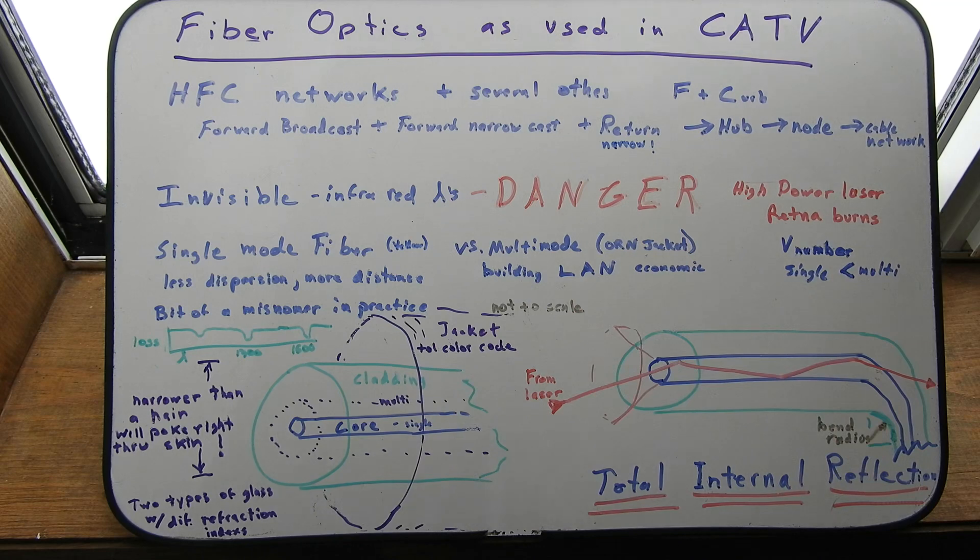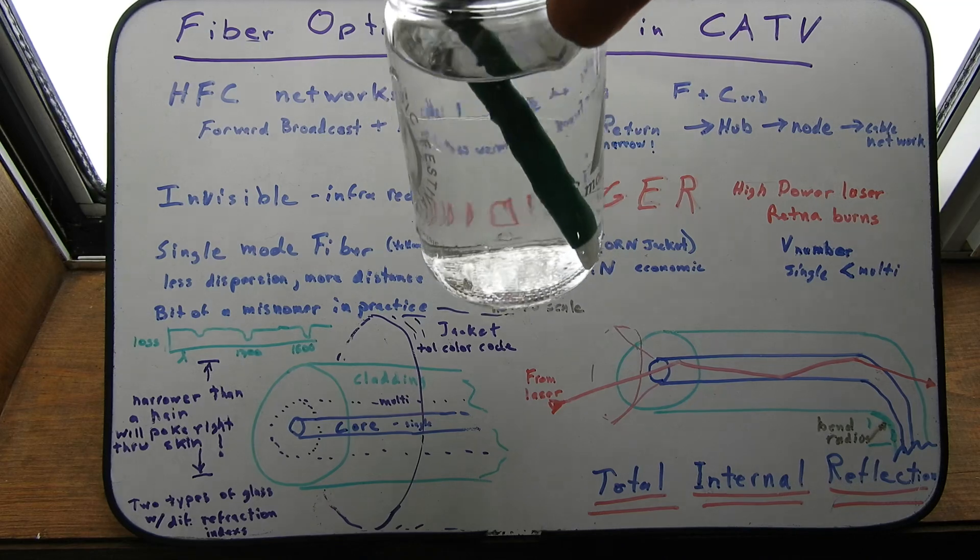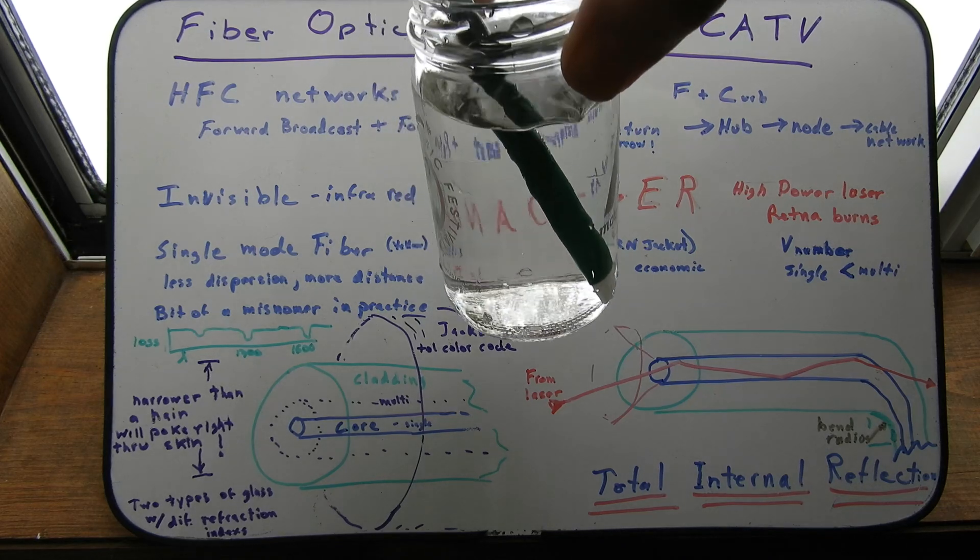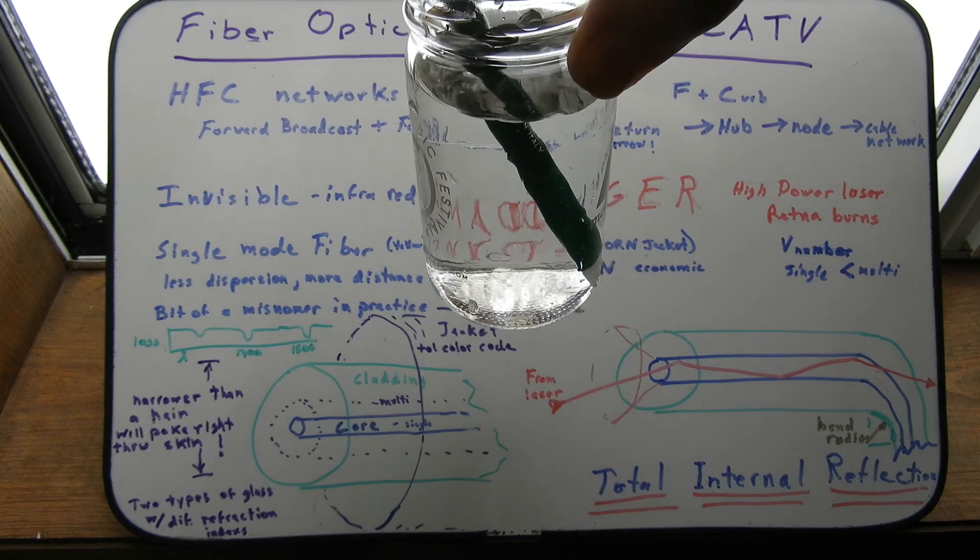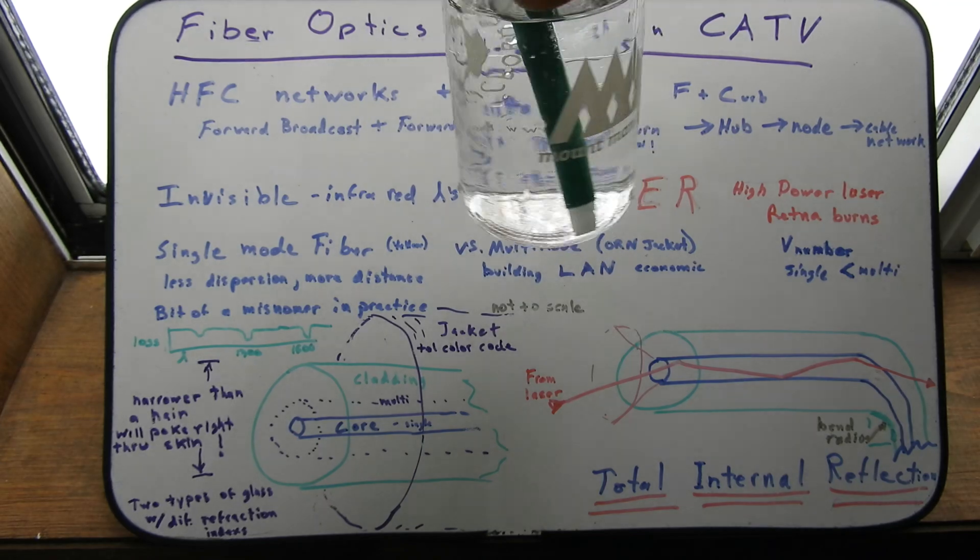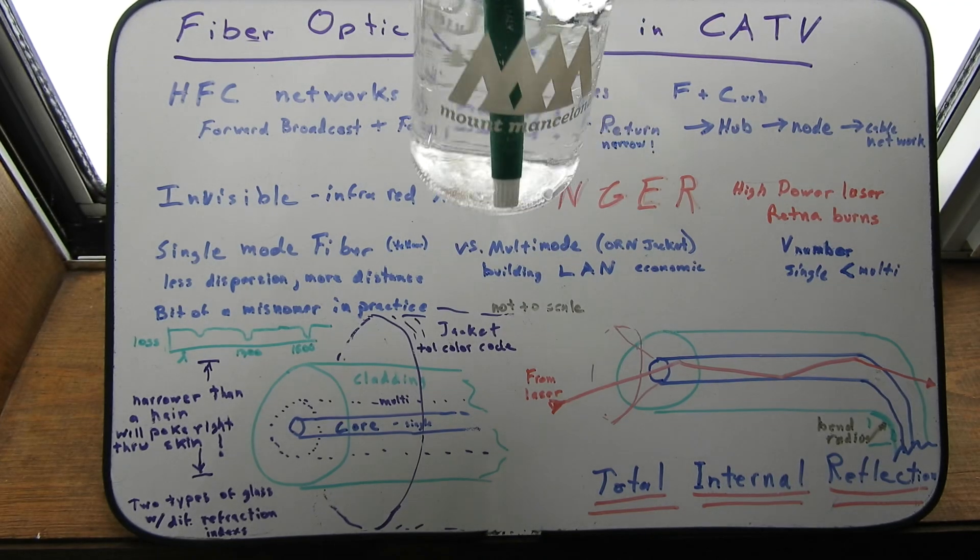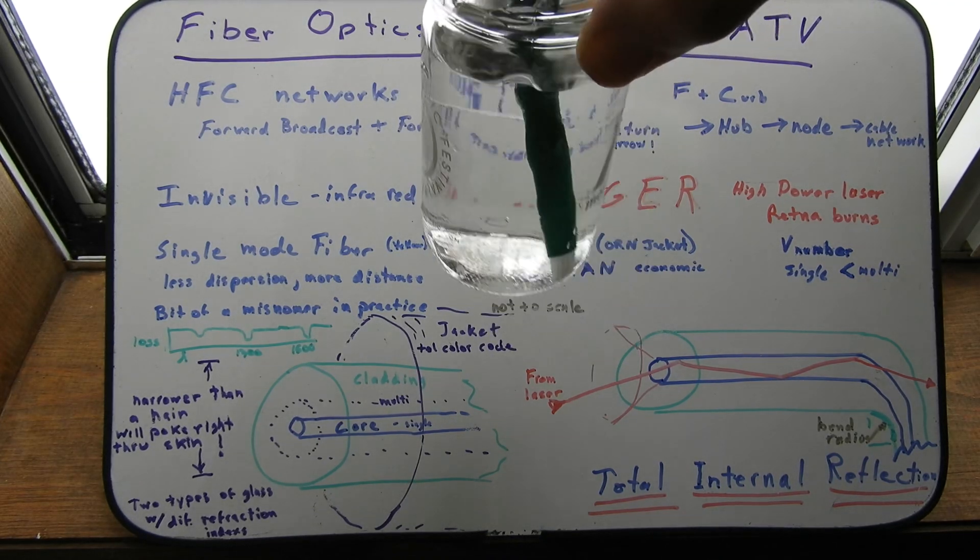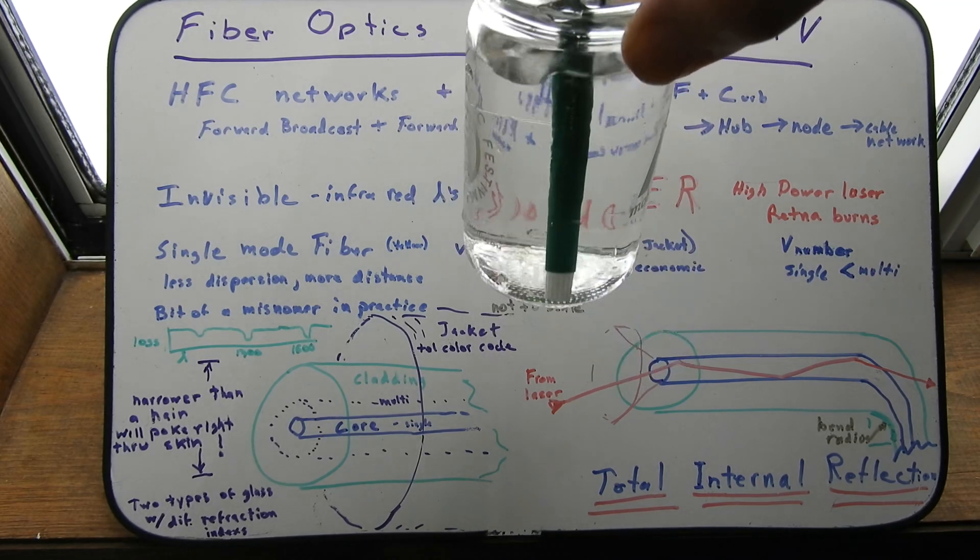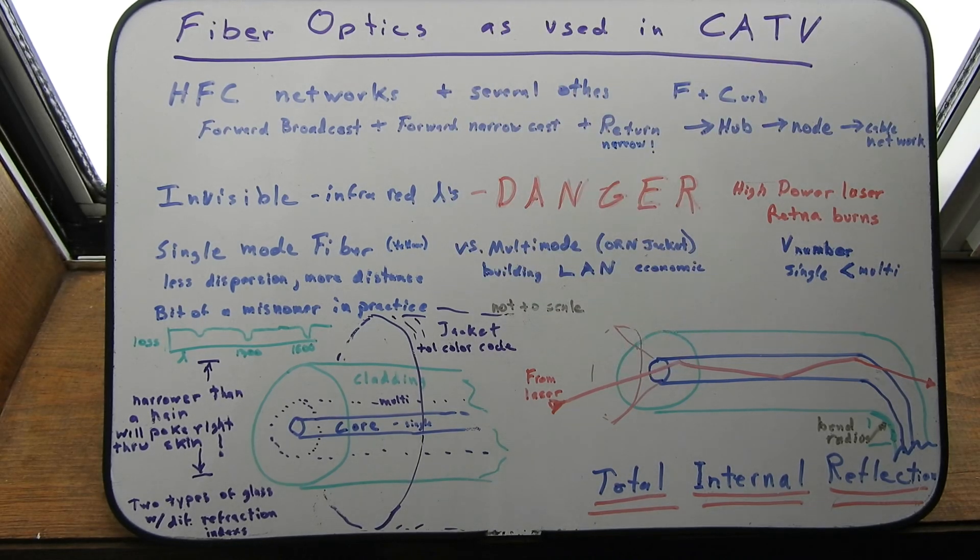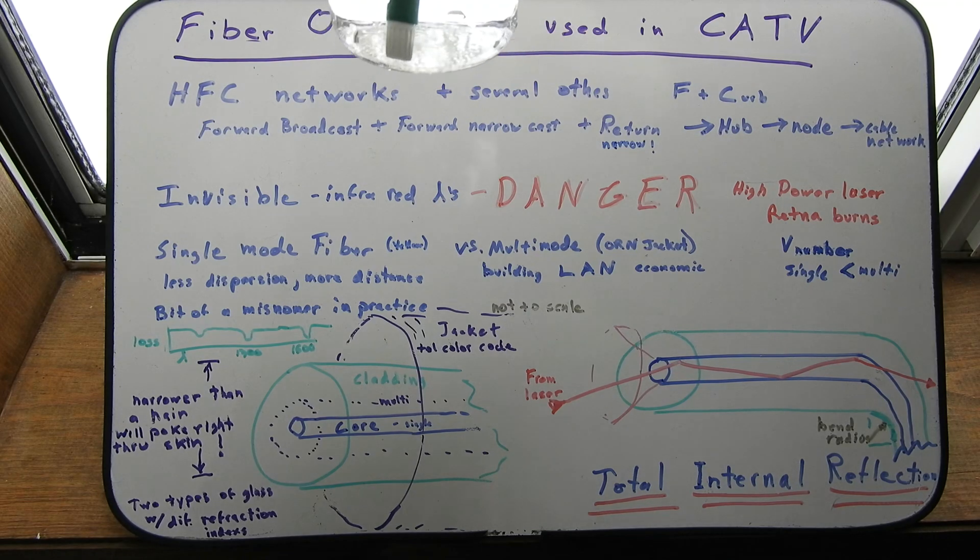So you've probably all seen the pencil in a glass type deal. You know, the pencil looks broken. Marker pen in this case. So that's called refraction. Because the light's traveling at different speeds through the air than it is the water. And even different glasses have different refraction rates.